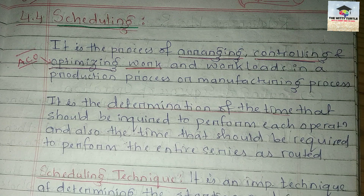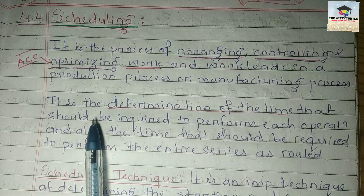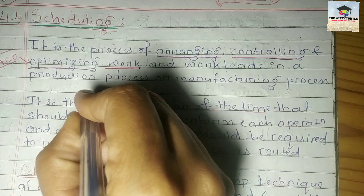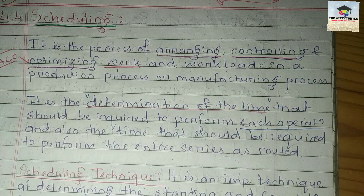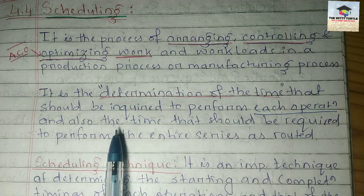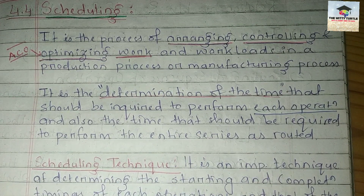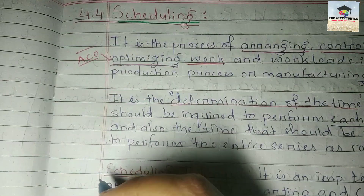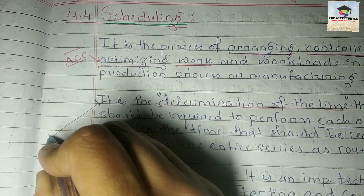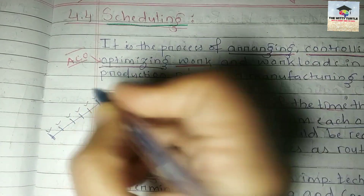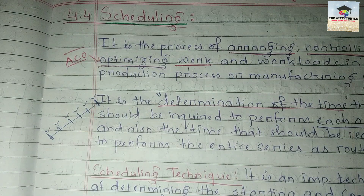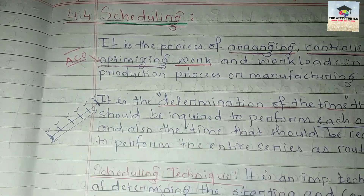Scheduling is the determination of the time that should be required to perform each operation, and also the time required to perform the entire series. So the basic aim of scheduling is to estimate the time required to perform each operation individually, and the time required to perform the entire series.